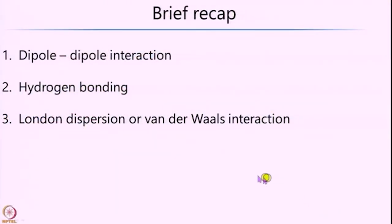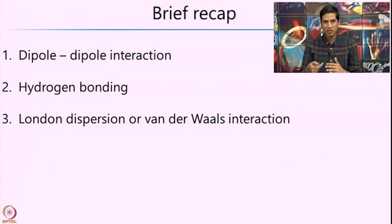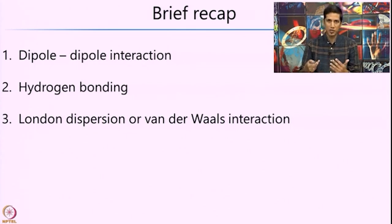In the previous lecture, we had seen what are called as dipole-dipole interactions, or to be more precise, permanent dipole-permanent dipole interactions. We said that the interaction potential depends as 1/r³, and for this we had taken various examples like two water molecules interacting, two molecules of acetone, or any two uncharged molecules that have a permanent dipole in their ground state. This potential goes as 1/r³ along with factors that account for the orientation of the two dipoles.